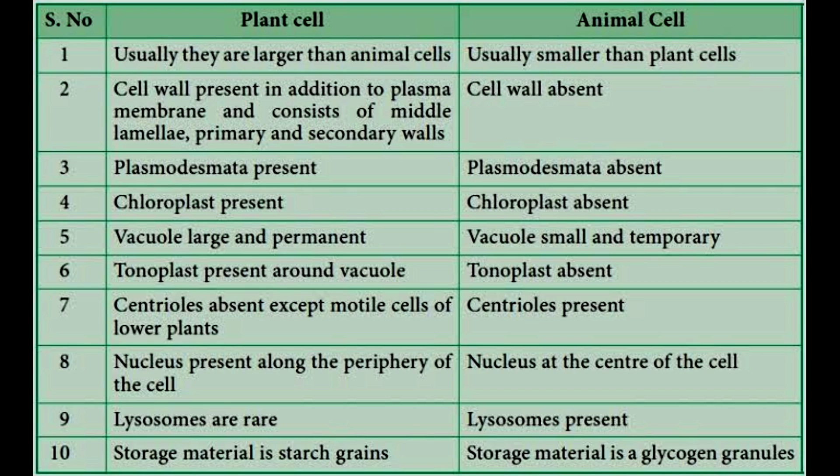In plant cell, the cell wall is present in addition to the plasma membrane and consists of middle lamella, primary and secondary walls. In animal cell, cell wall is absent.